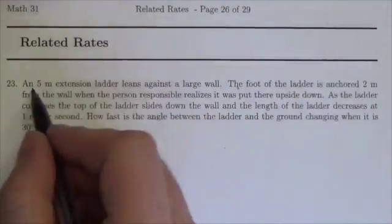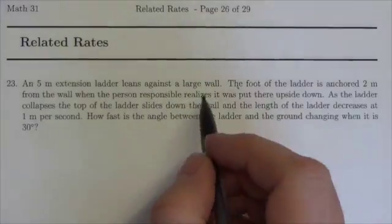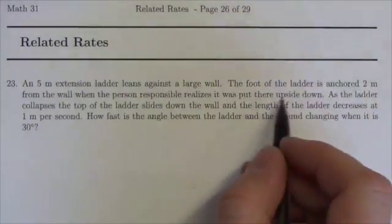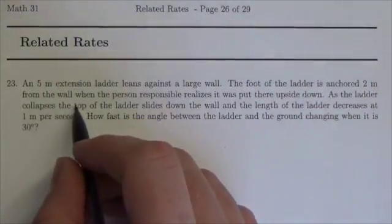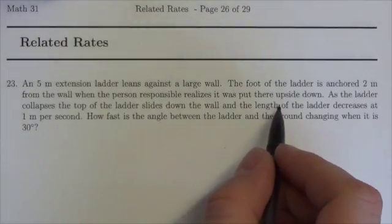So in this related rates problem, we read that a 5 meter extension ladder leans against a large wall. The foot of the ladder is anchored 2 meters from the wall when the person responsible realizes it was put there upside down.